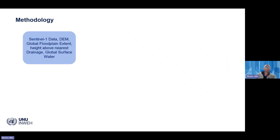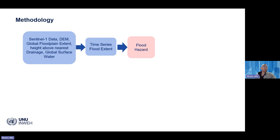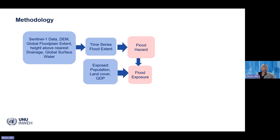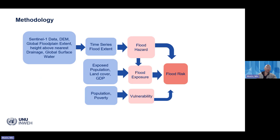Our methodology uses Sentinel-1 SAR data together with a DEM and other global datasets including global floodplain extent, height above nearest drainage, and global surface water to process time series flood extent and analyze flood hazard. We then use population, cropland and GDP data to generate flood exposure, and poverty and population age dependency for vulnerability analysis. These three components are combined to generate flood risk maps.